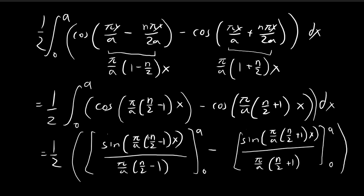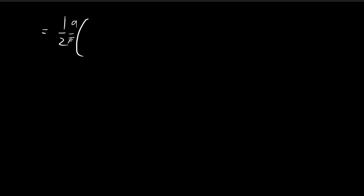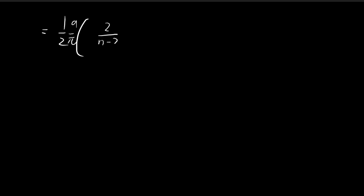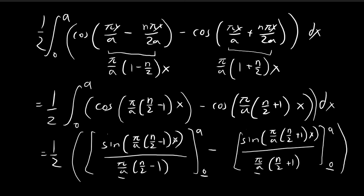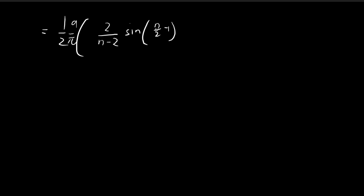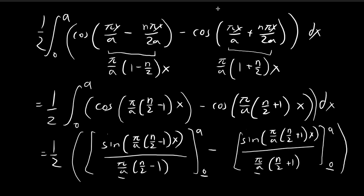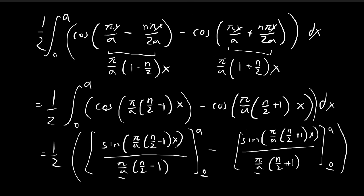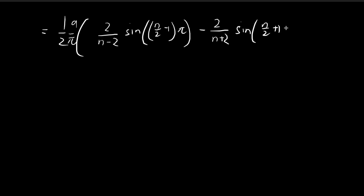When substituting in 0, both sine terms equal 0. When substituting in a, the a cancels with the denominator. Pulling constants out, the first term becomes (a/π) × (2/(n−2)) × sine[(n/2 − 1)π], and the second term becomes (a/π) × (2/(n+2)) × sine[(n/2 + 1)π].